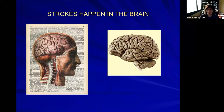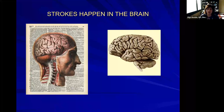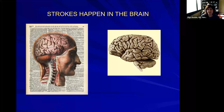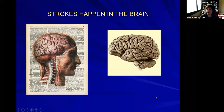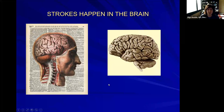Strokes happen in the brain. I have to explain this a lot because patients understand that an infarct happens in the heart — a stroke does not happen in the heart, it's a condition of the brain. The brain is responsible for many of our functions. I will have a couple of slides with some graphic pictures of what the brain looks like, so I'll give a warning — it may be a little gross to look at, but it's important to see.